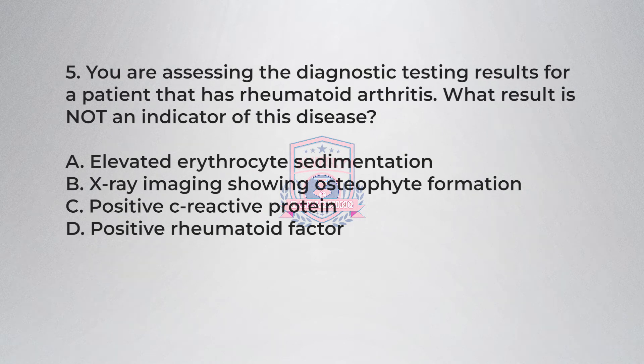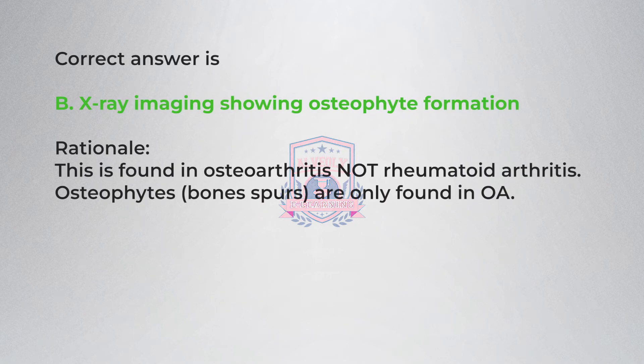Question five: You are assessing the diagnostic testing results for a patient that has rheumatoid arthritis. What result is not an indicator of this disease? A) Elevated erythrocyte sedimentation, B) X-ray imaging showing osteophyte formation, C) Positive C-reactive protein, D) Positive rheumatoid factor. Correct answer is B: X-ray imaging showing osteophyte formation.